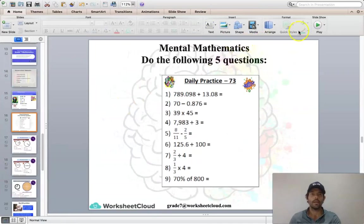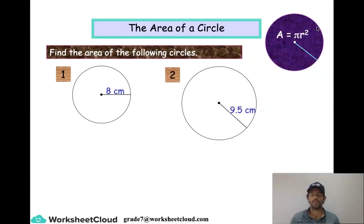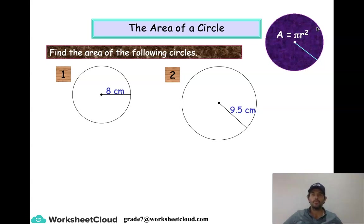Today's main theme is area of circles. Yesterday we did circumference of a circle, which was the perimeter of a circle. The two different formulas were pi times diameter — remember the diameter is the length of the line that cuts the circle in half, going from one edge to the other through the center — and the other formula was circumference equals 2πr, which is when you're given the radius and multiply it by 2 then by pi. Both will give you the same circumference.